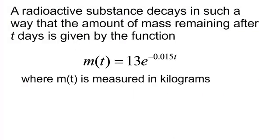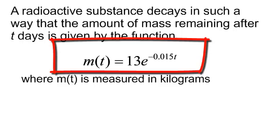Now not everything grows. Some things decay. We saw those graphs that instead of being a growth function, they were a decay function. They were decreasing. This problem, a radioactive substance decays in such a way that the amount of mass remaining after t days is given by the function m(t) = 13e^(-0.015t) where m(t) is measured in kilograms.